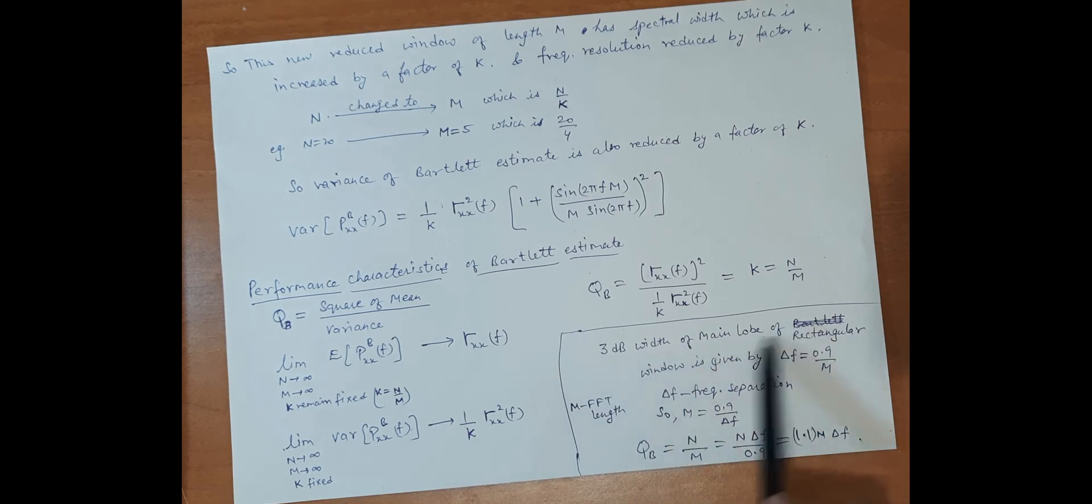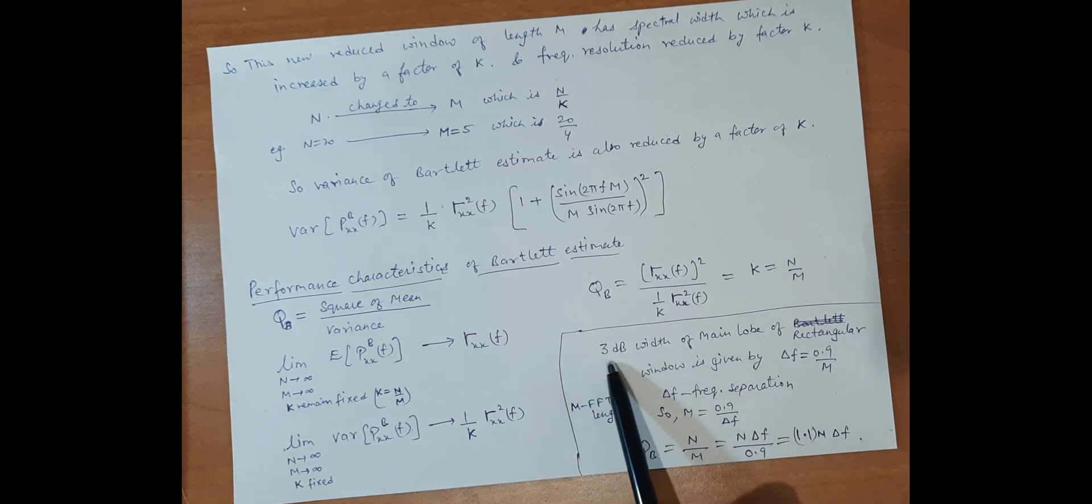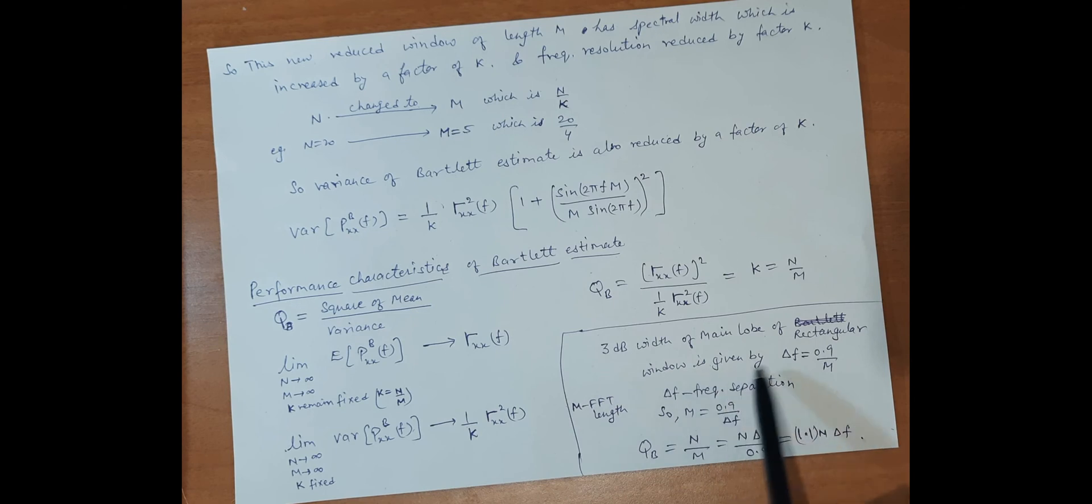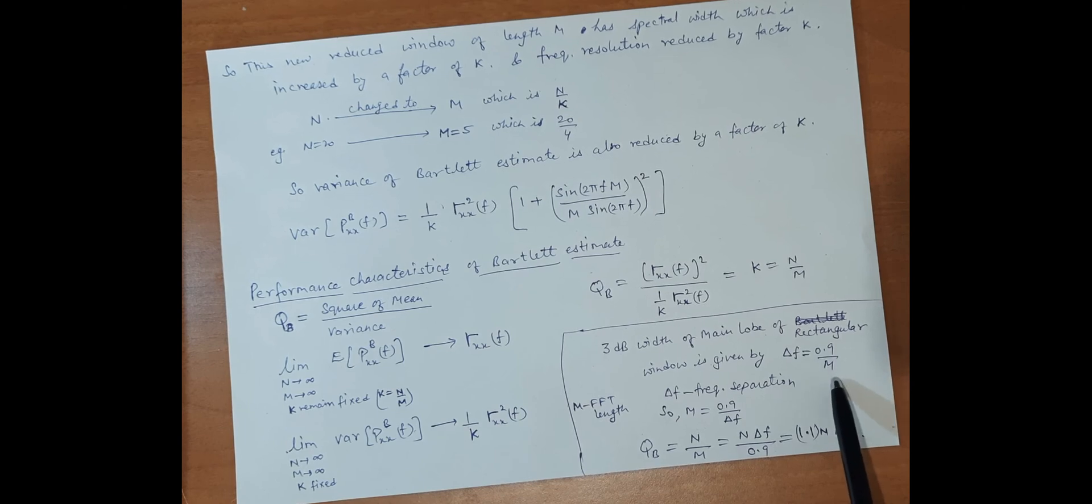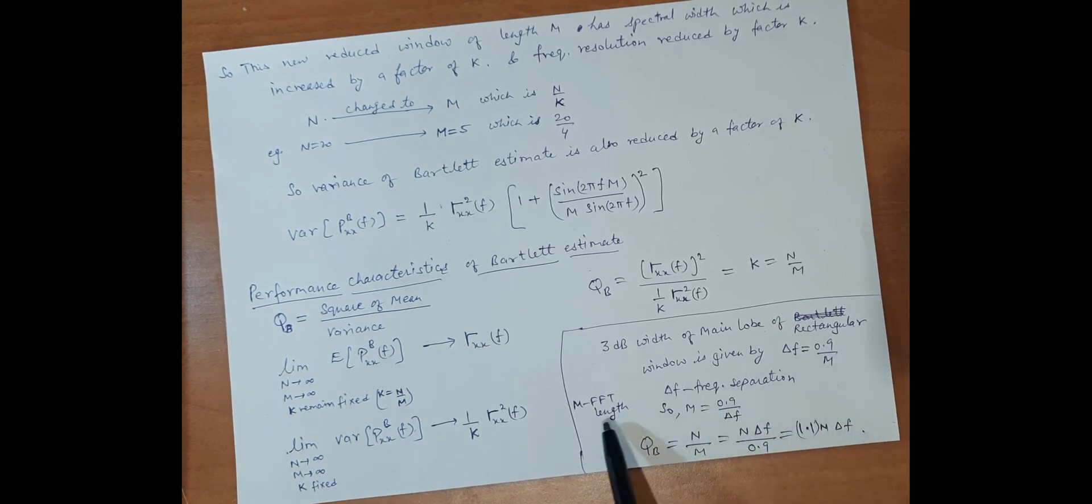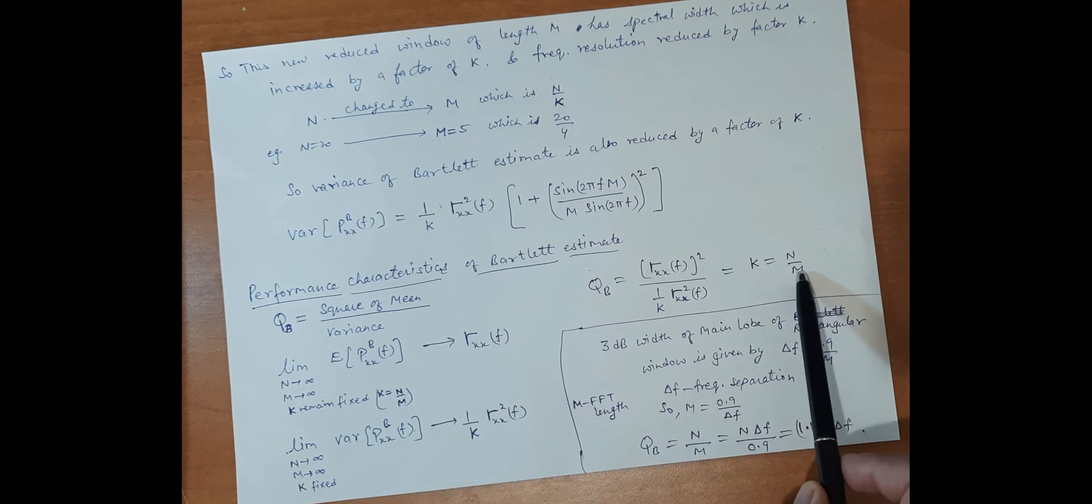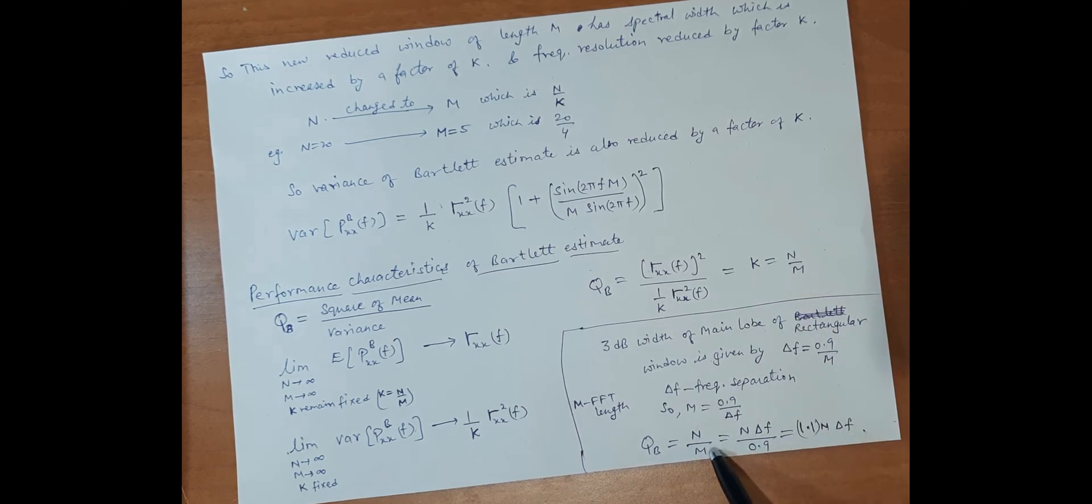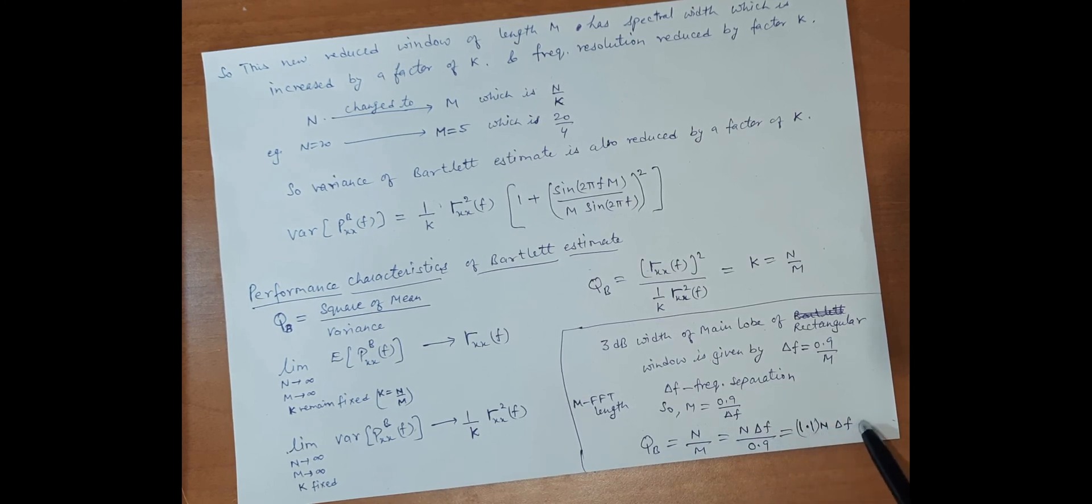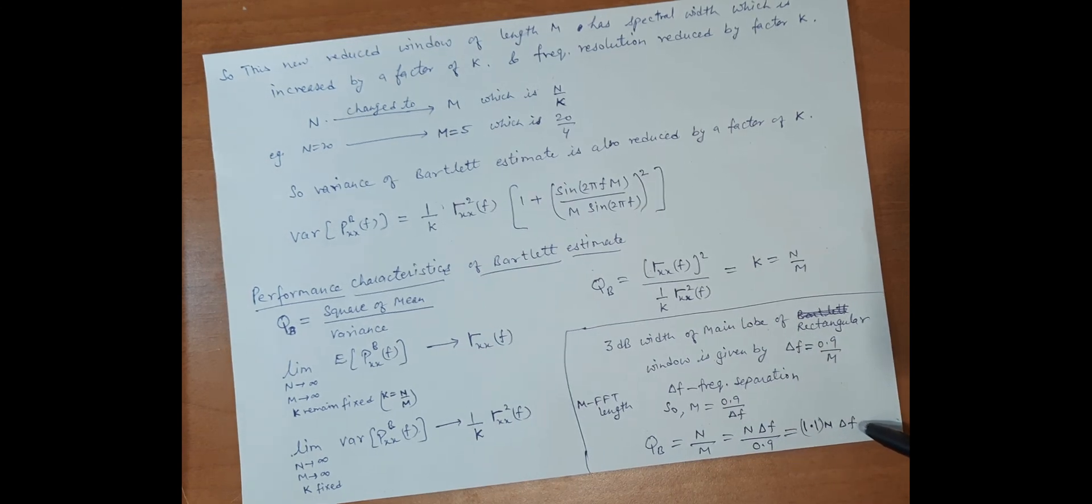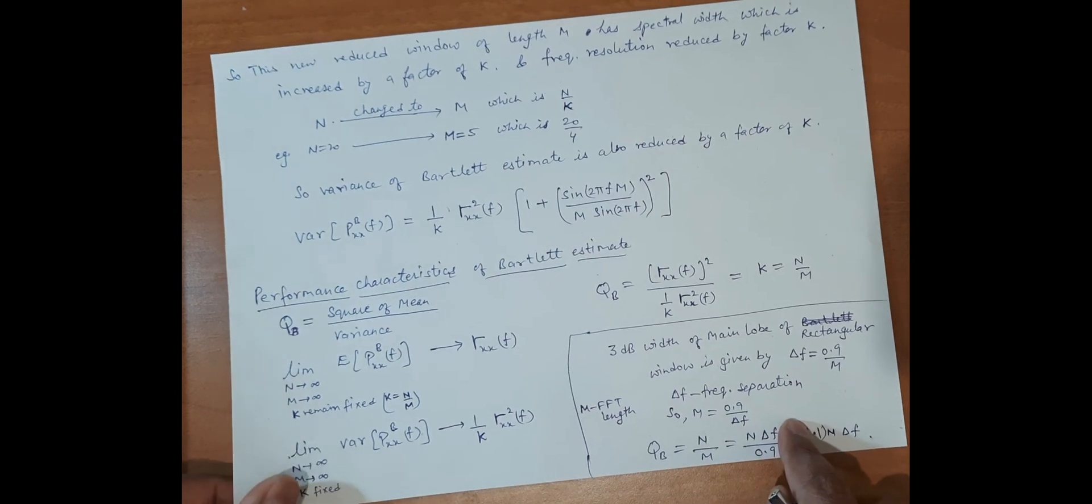The 3dB width of the main lobe of a rectangular window is given by the frequency separation parameter 0.9 by m, where m is the number of samples. From this expression, m = 0.9 by Δf. Since Q_B is n upon m, putting the value of m gives the final expression in terms of n. If frequency separation and number of samples are given, we can find the quality factor for the Bartlett window.